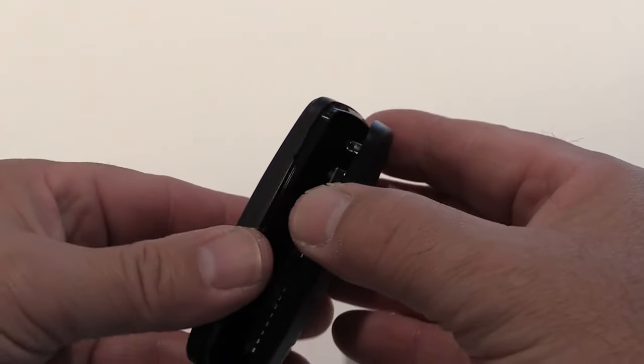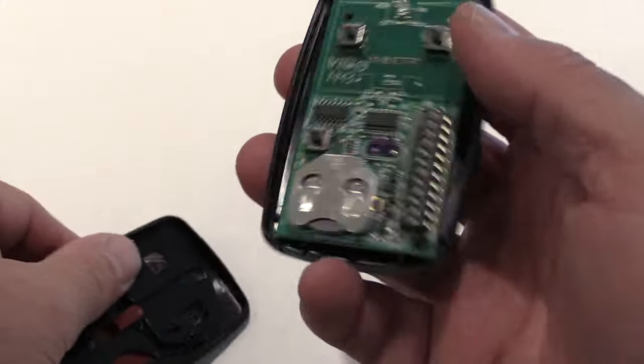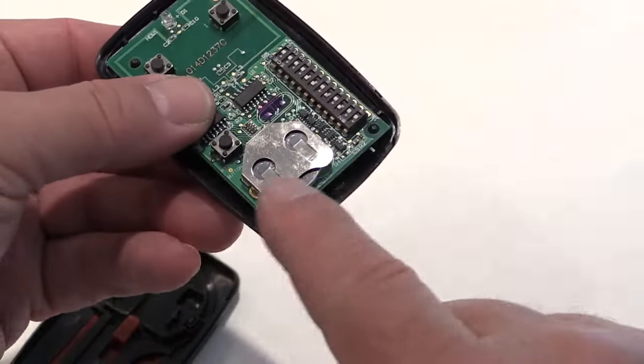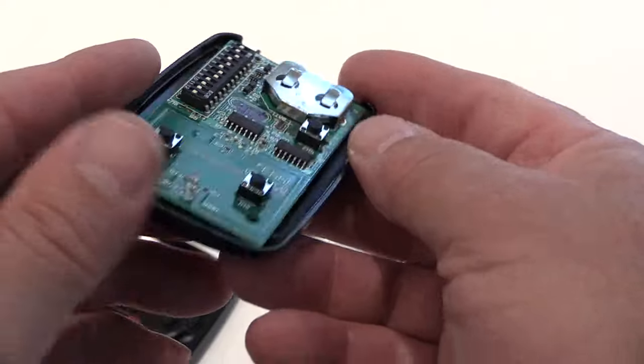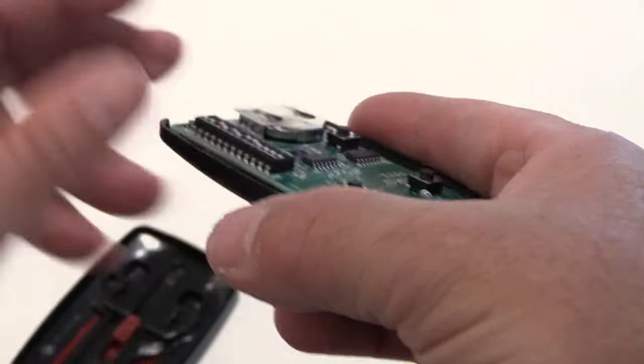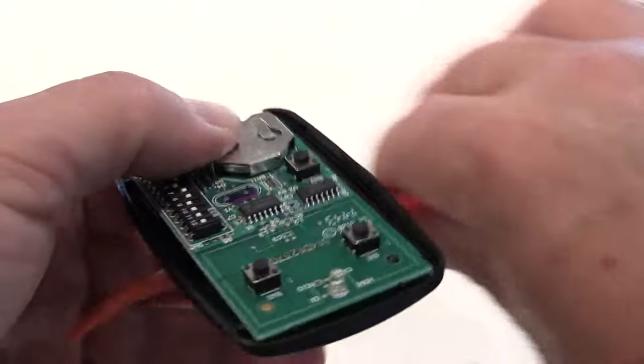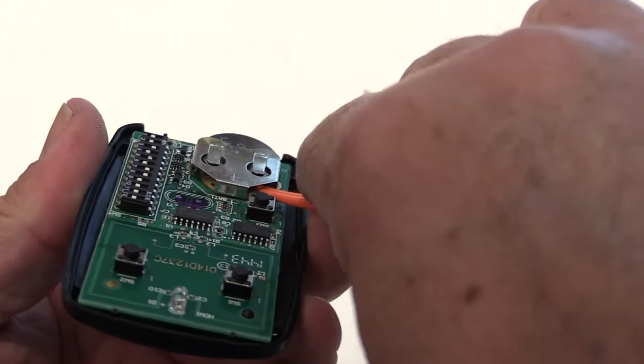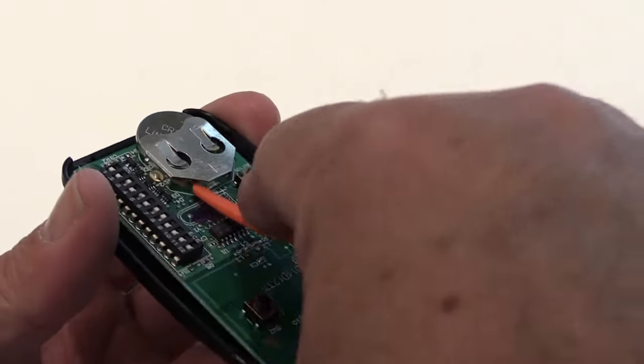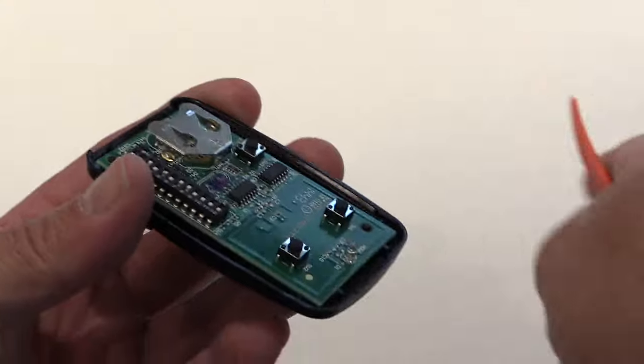Once you get it open, just pull it apart and it will reveal the battery inside. You're going to want to get something non-metallic, plastic or wood, and push the battery out of that little compartment. You might want to work it from both sides, giving little gentle pushes on each side. You'll see the battery starts to slide out, give it a last little push, pop it out of there, and that's it.